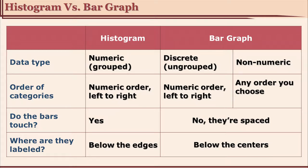If we are talking about the order of categories, in histogram it is numerical data, so numerical order, and we see it from left to right — starting from 0, increasing, with positive values on the right and negative on the left. In bar graph, if the data is discrete or numerical it is also from left to right, but if it is non-numerical, order does not make sense because it is categorical. So the sequence is not important; you can arrange it the way you like. That is not the case with histogram — there is a definite order.